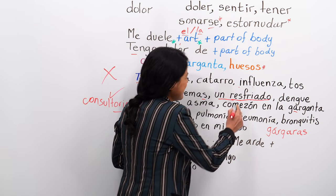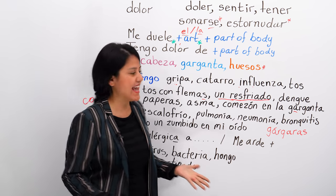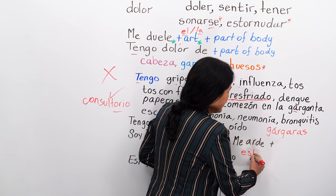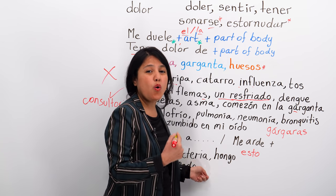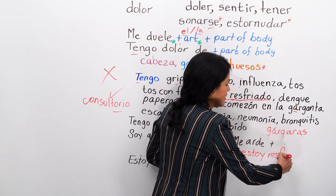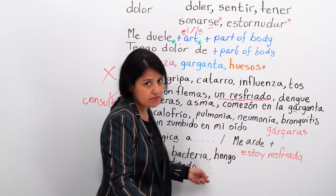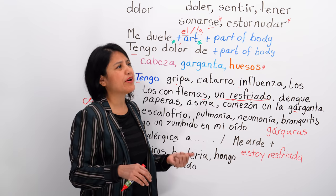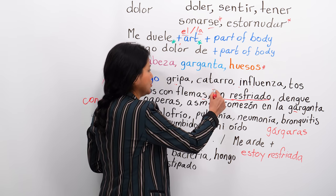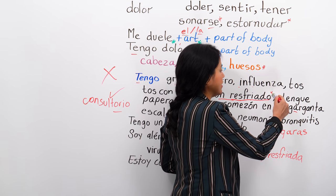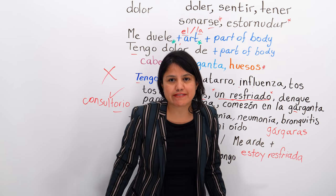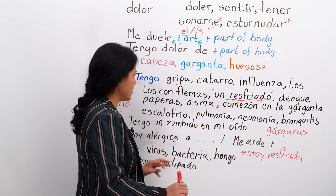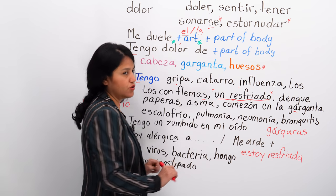Tengo un resfriado. You can also say estoy resfriada — or resfriado if you're a man. Tengo un resfriado or estoy resfriada are both correct. You can also say tengo dengue, tengo paperas — mumps, those funny swollen balls on your jaw. Niños chiquitos tienen paperas.